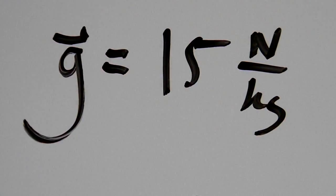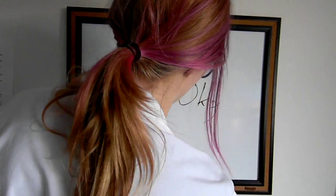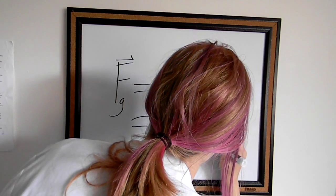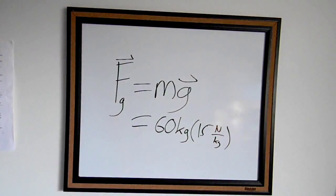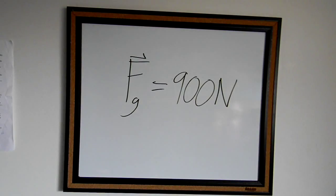You are standing on the surface of the celestial body, yo mama. When you're standing on the surface of yo mama, the force of gravity is 15 newtons per kilogram. Your mass is 60 kilos. We get Fg equals 60 kilograms times 15 newtons per kilogram — 60 times 15 is 900 newtons.